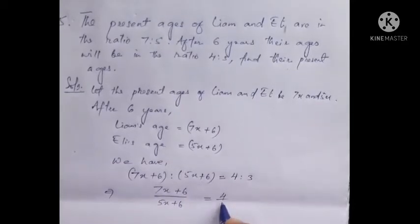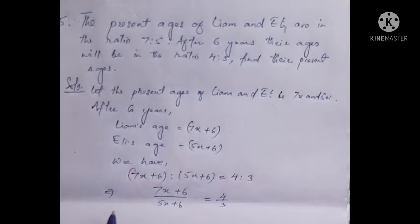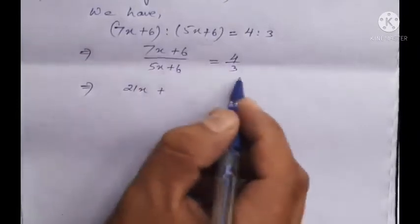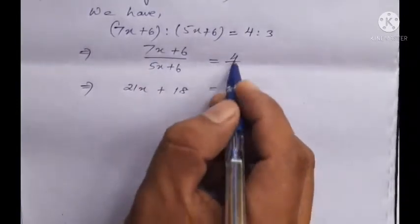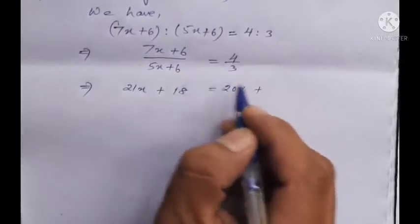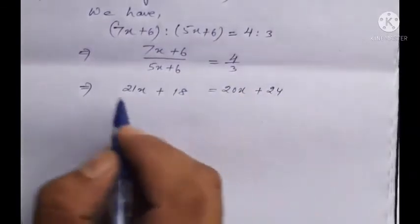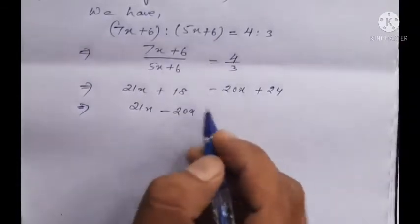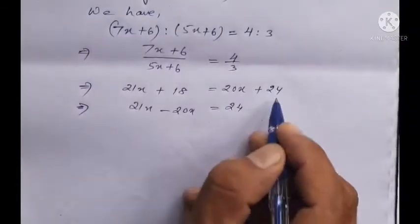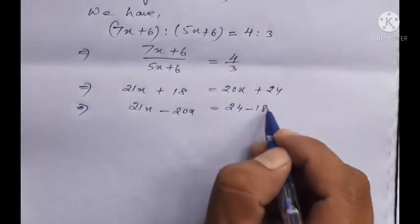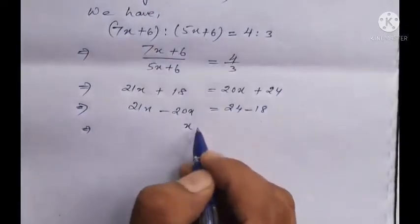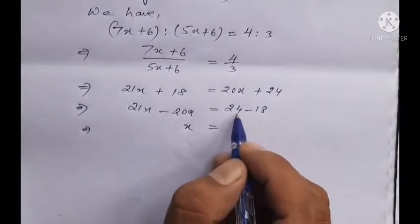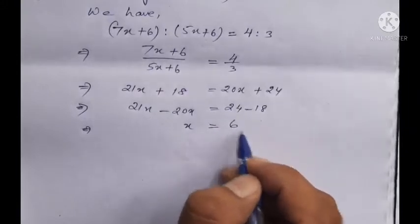Cross multiply: 3 times 7x plus 6 equals 18, giving 21x plus 18. And 4 times 5x plus 6 gives 20x plus 24. So 21x plus 18 equals 20x plus 24.